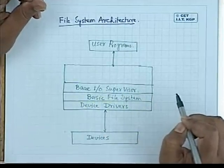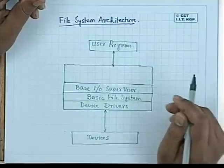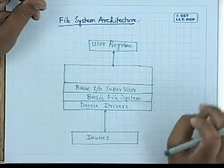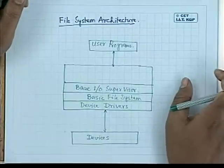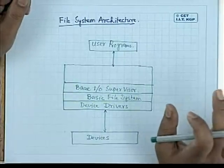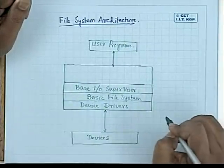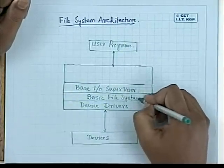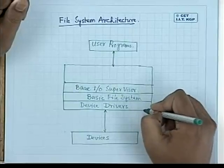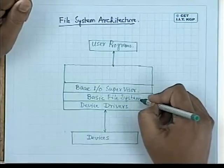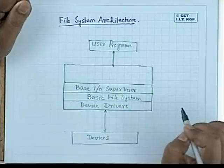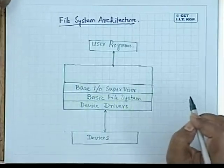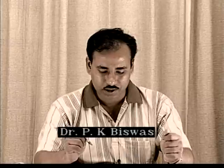The basic file system mainly deals with blocks; it does not understand the content of a block. It takes a block from the device and puts it into the buffer cache. For a write operation, it takes the content of the buffer cache and writes it to one of the blocks on the device — either a free block or the same block if updating existing data.